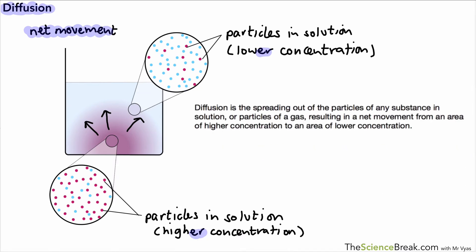Here's a very important definition to remember: Diffusion is the spreading out of particles of any substance in solution or particles of a gas, and we get the net movement from an area of higher concentration to an area of lower concentration. It's very important to know and remember that, and the diagram will help you remember it. So it's worth making a note and highlighting it.